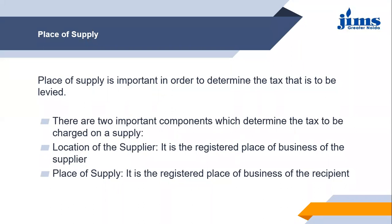When goods are moving or services are being provided, it is necessary to assess exactly what the place of supply is — where the recipient is receiving the goods. It might be possible that the recipient is somewhere else, the goods are being delivered to some other place, or to a person other than the one who ordered them. So there may be situations where the place of supply needs to be assessed differently, and without assessing the place of supply, GST cannot be calculated.